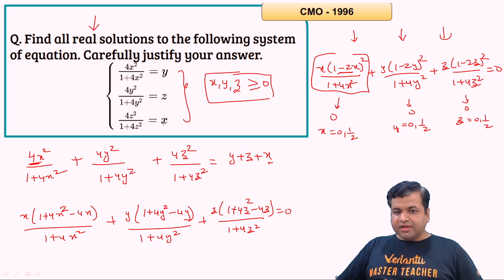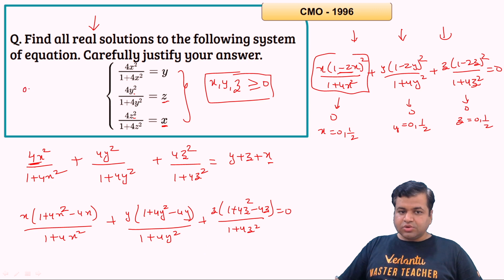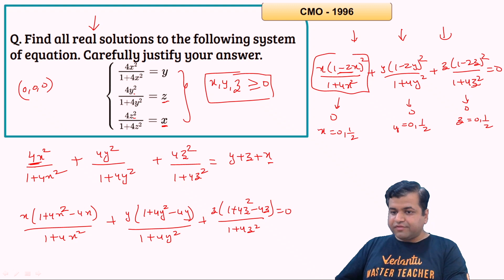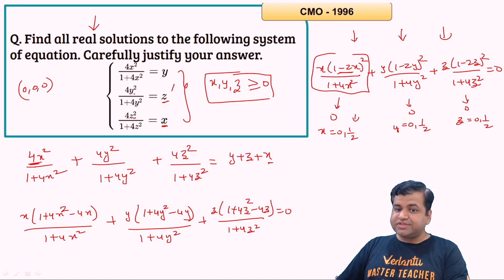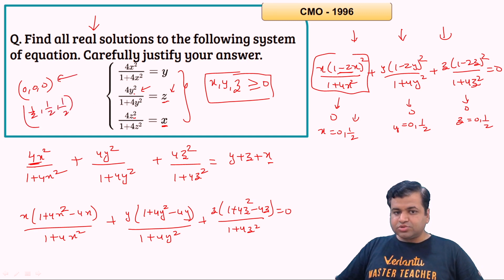If x = 0, then the third equation gives z = 0, and if z = 0, then the second equation gives y = 0. So one solution is (0, 0, 0). If x = 1/2, then z cannot be 0, so z must be 1/2, and if z = 1/2, then y cannot be 0, so y must be 1/2. The other solution is (1/2, 1/2, 1/2). Both solutions satisfy all three equations.